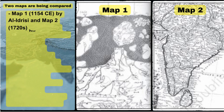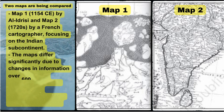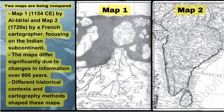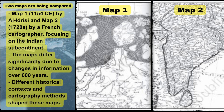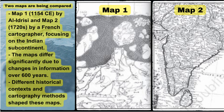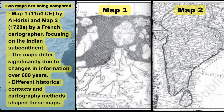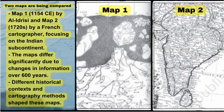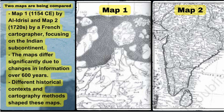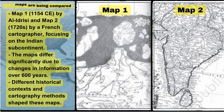Two maps are being compared: Map 1 from 1154 CE by Al-Idrisi, and Map 2 from the 1720s by a French cartographer, focusing on the Indian subcontinent. The maps differ significantly due to changes in information over 600 years, and different historical contexts and cartography methods shaped these maps.